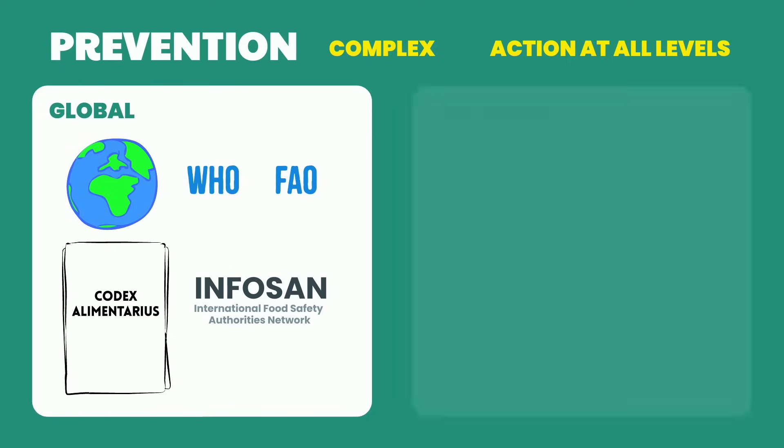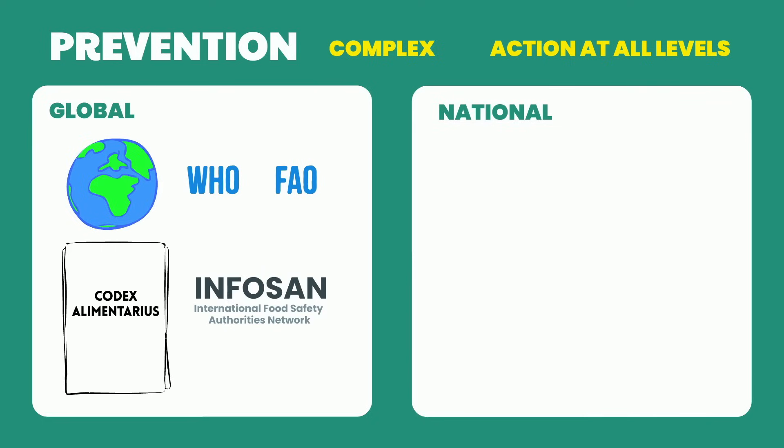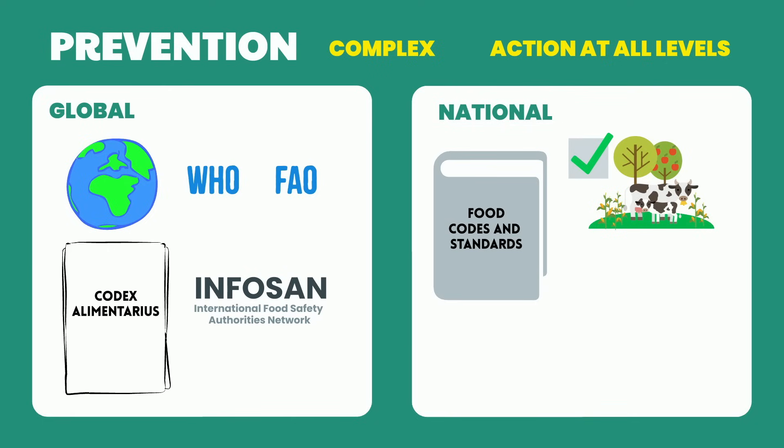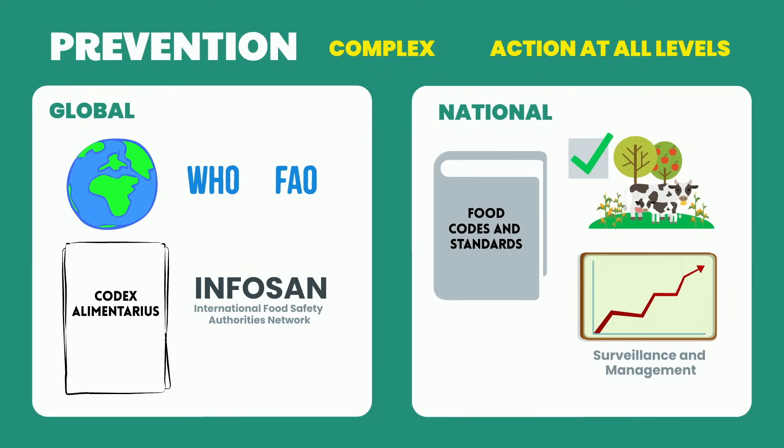At a national level, governments are responsible for the implementation and enforcement of food standards and codes, ensuring good agriculture and manufacturing practices, and for the surveillance and management of foodborne illness and outbreaks.